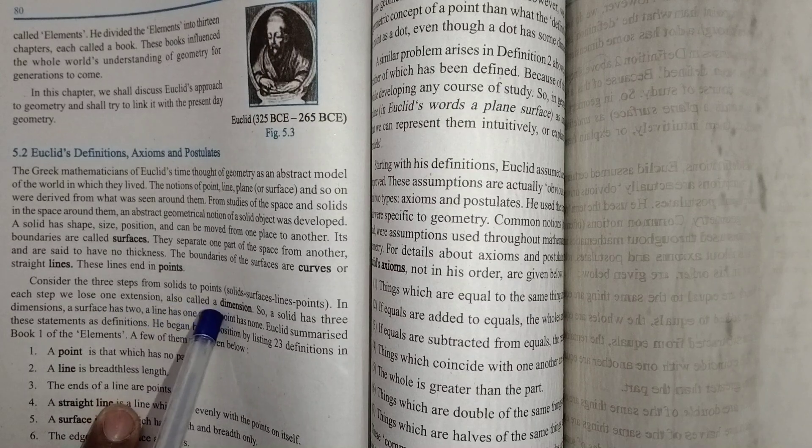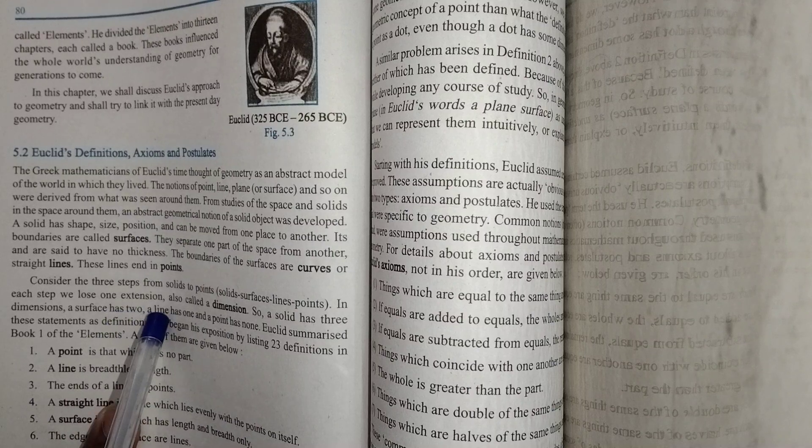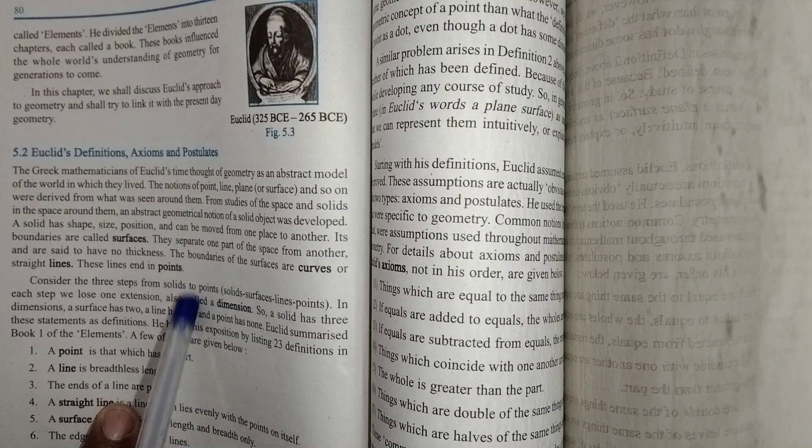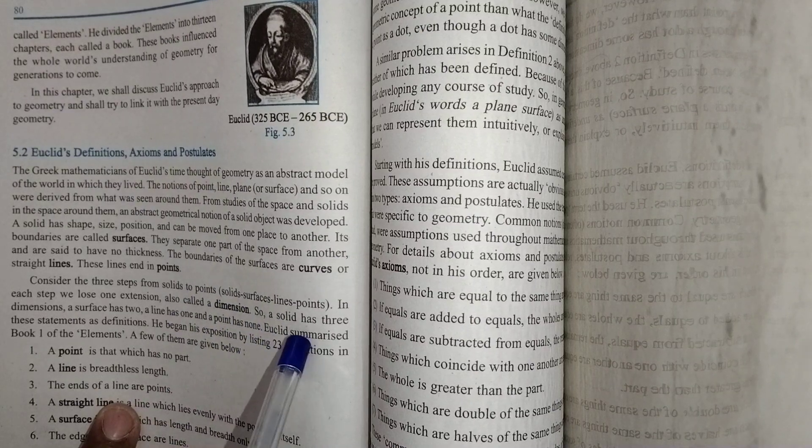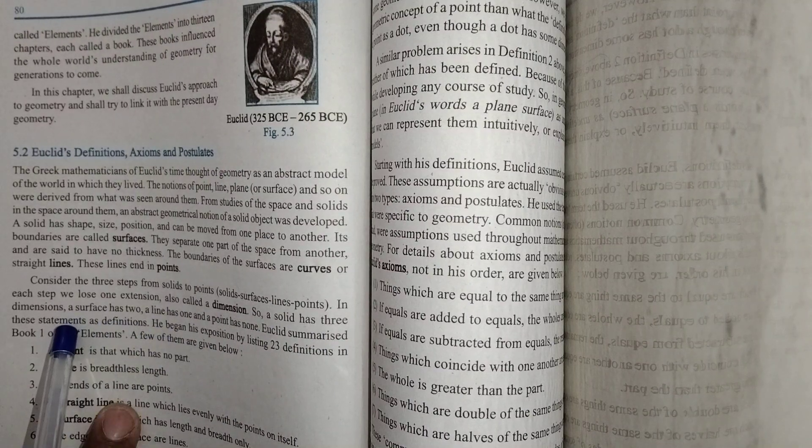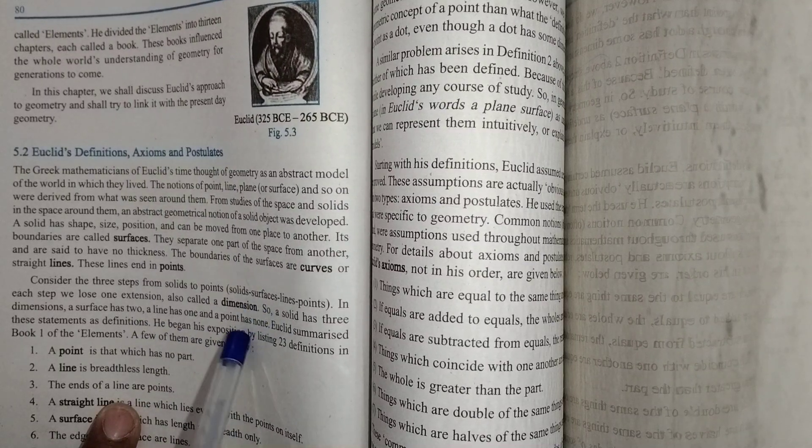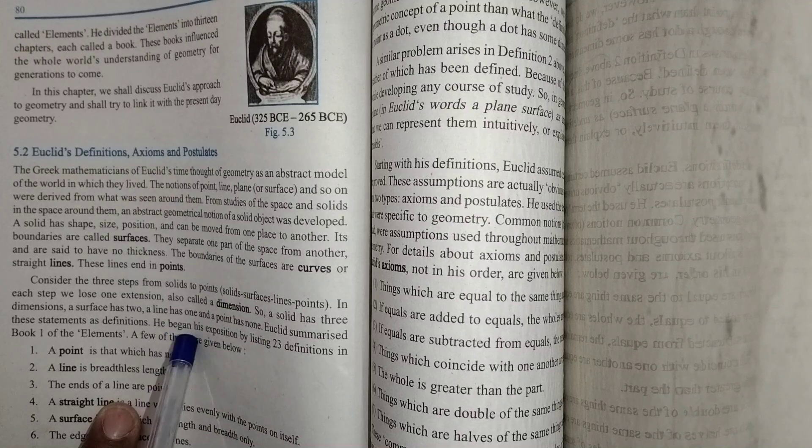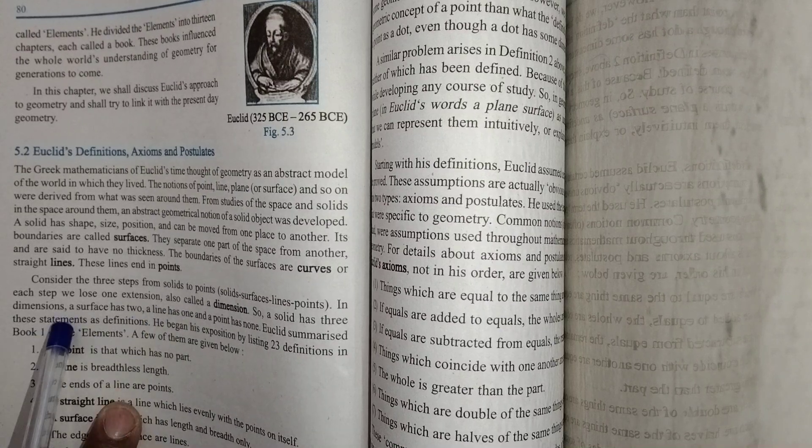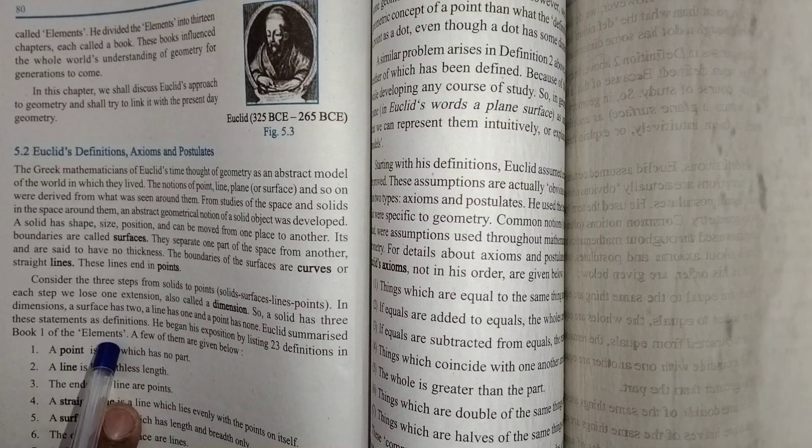Consider the three steps from solid to points. In each step, we lose one extension, also called a dimension. So a solid has three dimensions, a surface has two, a line has one, and a point has none.